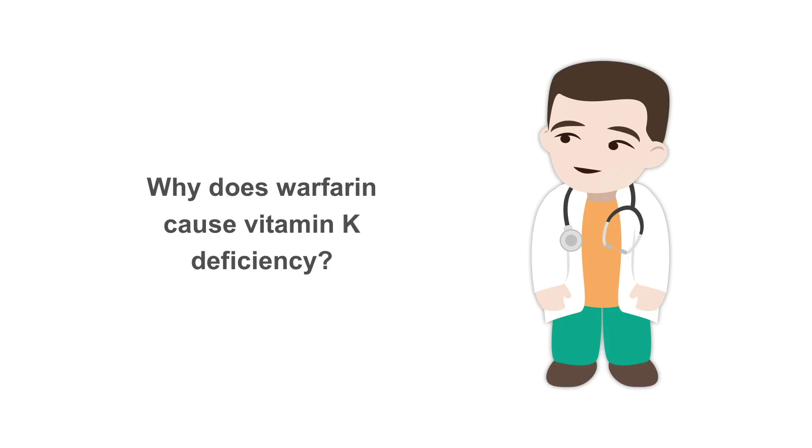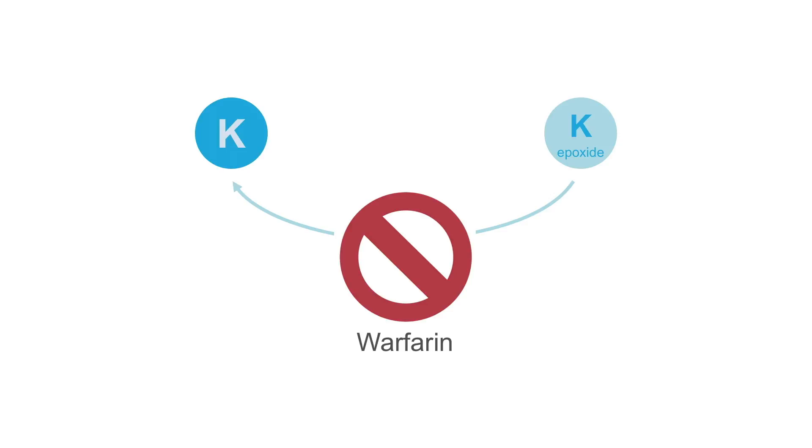Why does warfarin cause vitamin K deficiency? There are two forms of vitamin K: the functionally active vitamin K and the non-functional form vitamin K epoxide. Reductase enzyme converts vitamin K epoxide to functional vitamin K. Warfarin blocks this reductase enzyme. Non-functional vitamin K epoxide accumulates, thus levels of functional vitamin K are reduced.